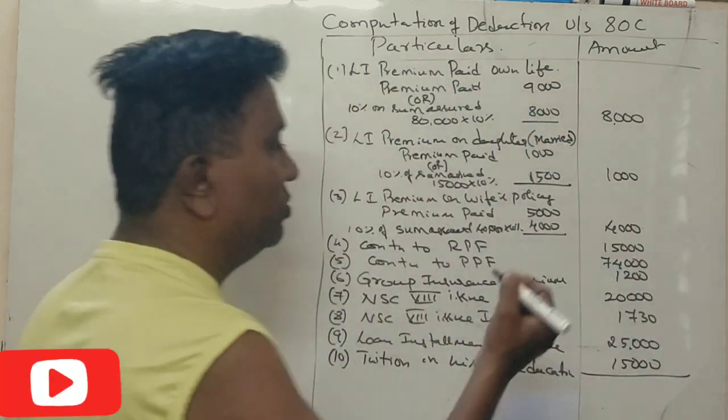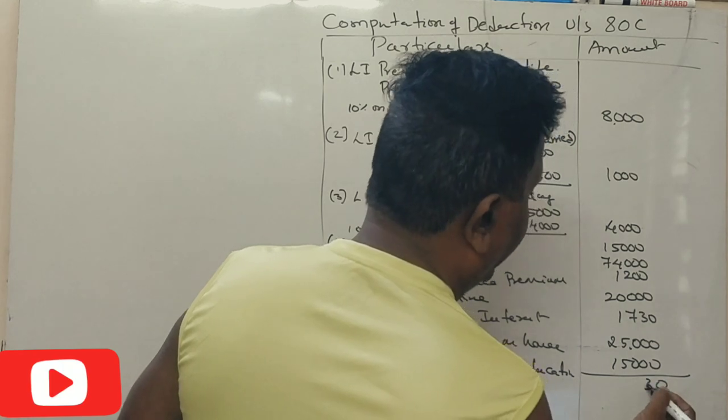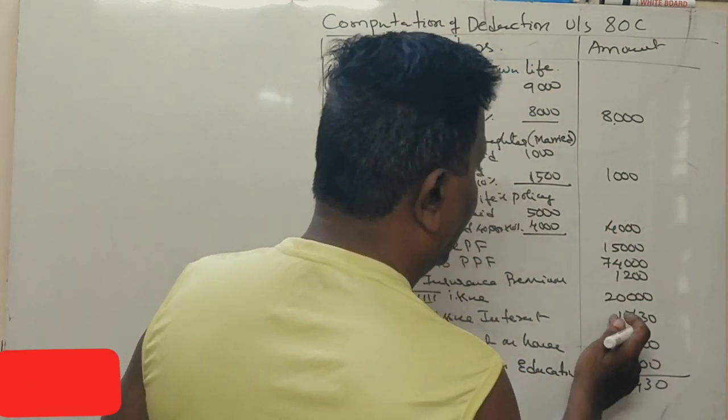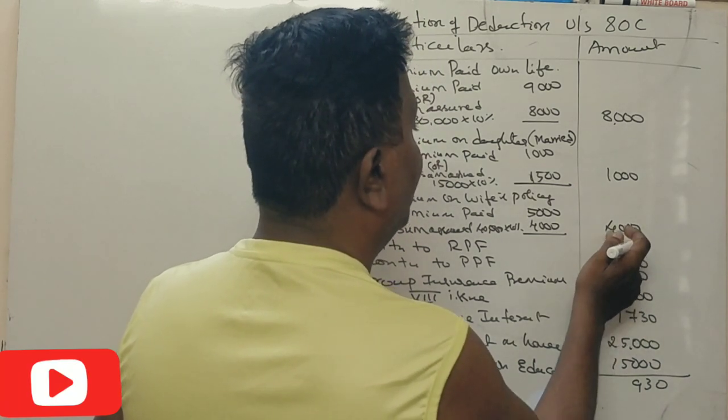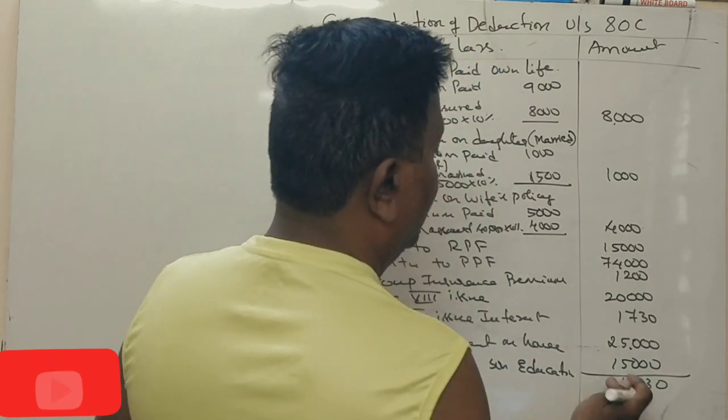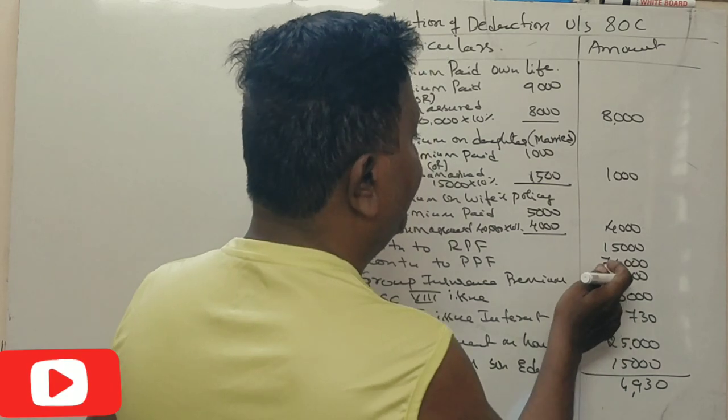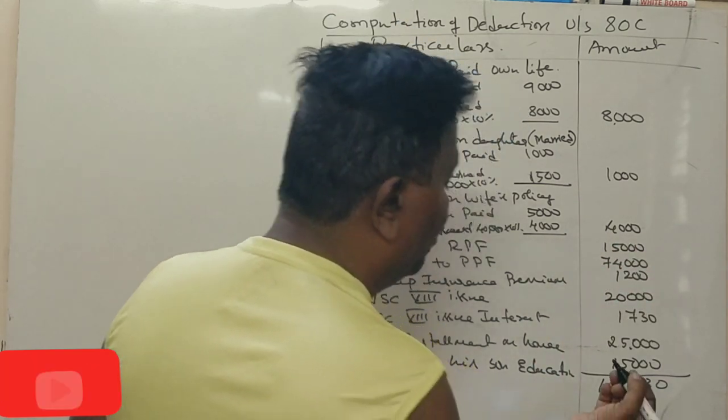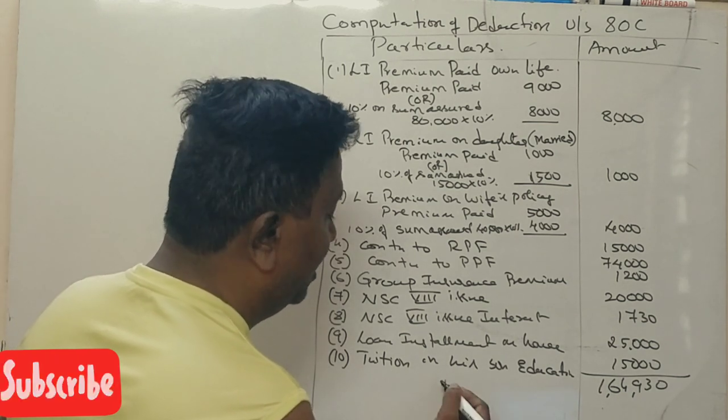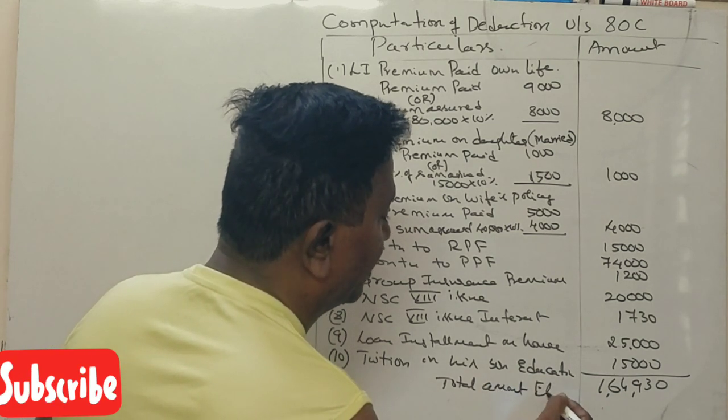We will find out the total. So 1,64,930 is the total amount eligible for deduction.